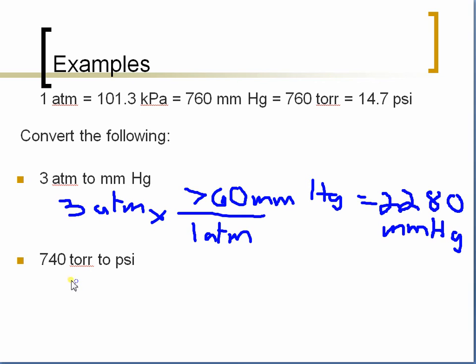Second example. I'm going from Torr to PSI. So if I have 740 Torr, I want to go to PSI. I'm going to multiply times my conversion factor. So for every 760 Torr, PSI is 14.7.